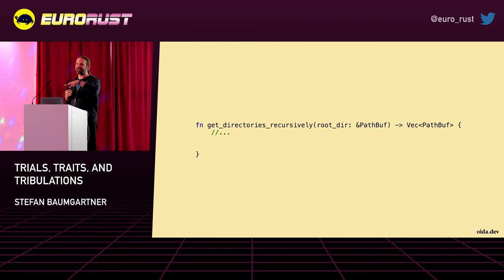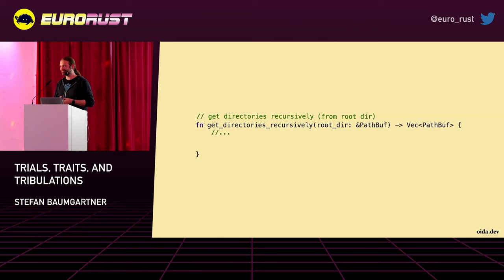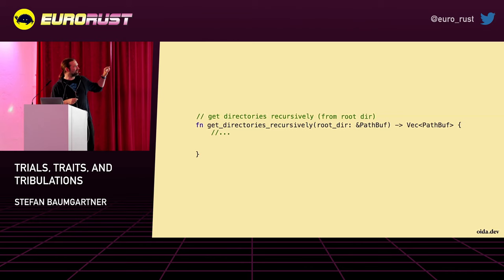Once we changed the structure of how we load files from the disk, somebody sent us a pull request. They wanted to get the directories where the files are recursively from a root directory, and they wanted to make sure it really is the right function. So they did, of course, a classic code comment: 'get directories recursively from root directory.' You can throw all your code comment memes at me right now — they all fit. It's fantastic. Like the cat in front of the cat sign, all of that.